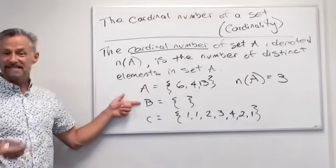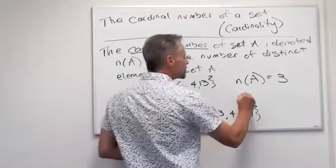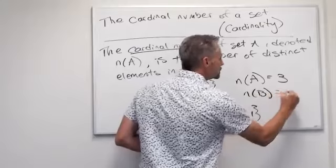Notice set B is the empty set. It's just a set with no elements. Well, if it doesn't have any elements in it, we would say the cardinality of B is 0.